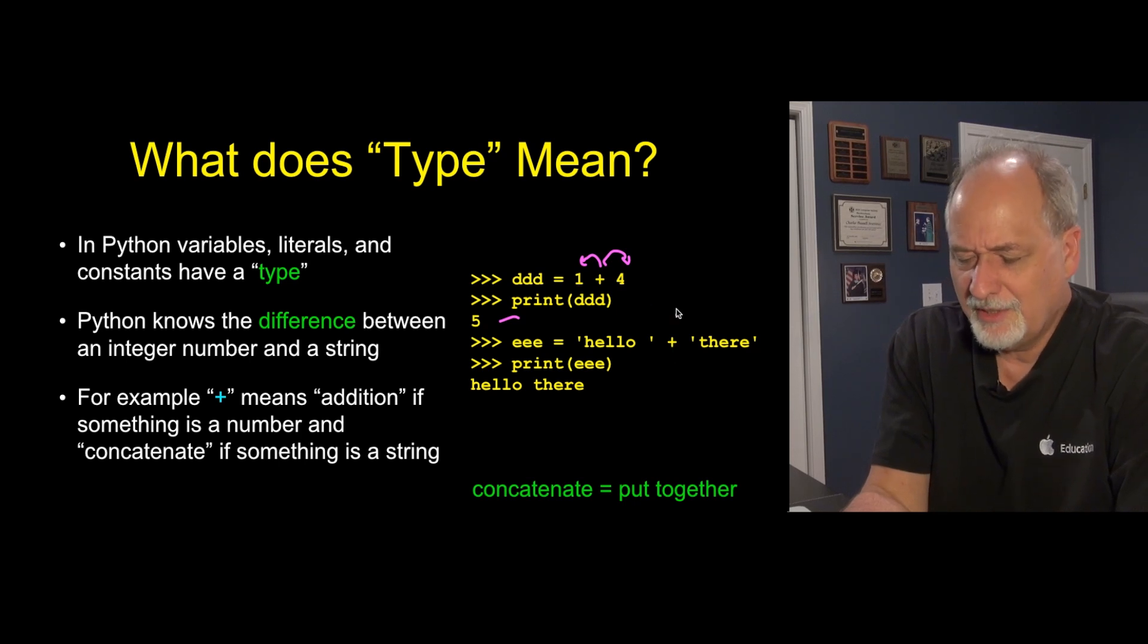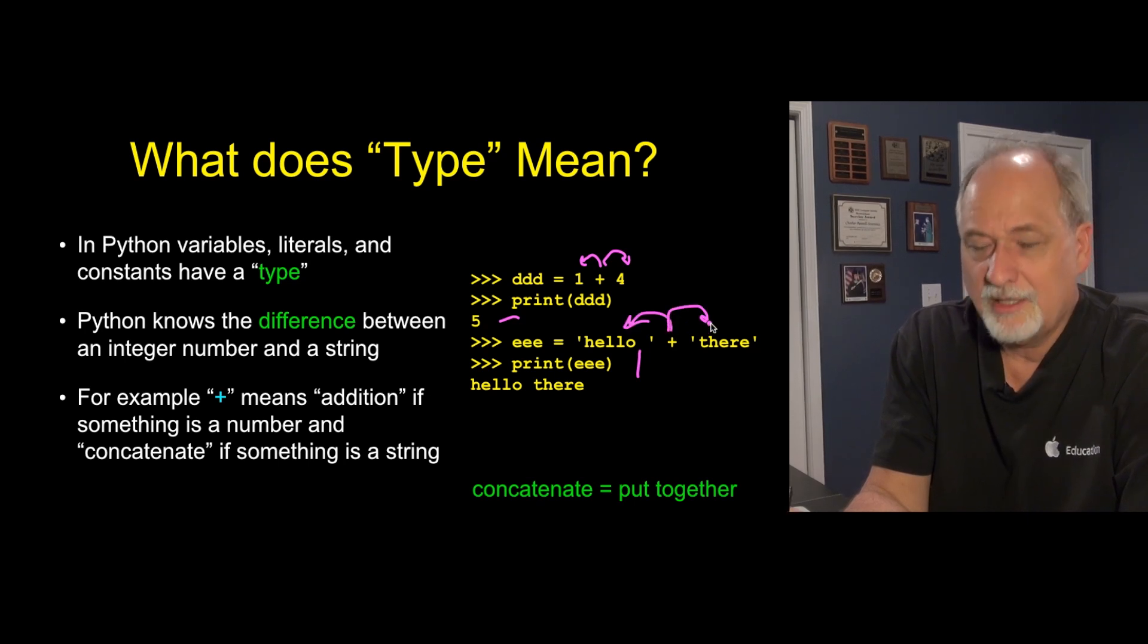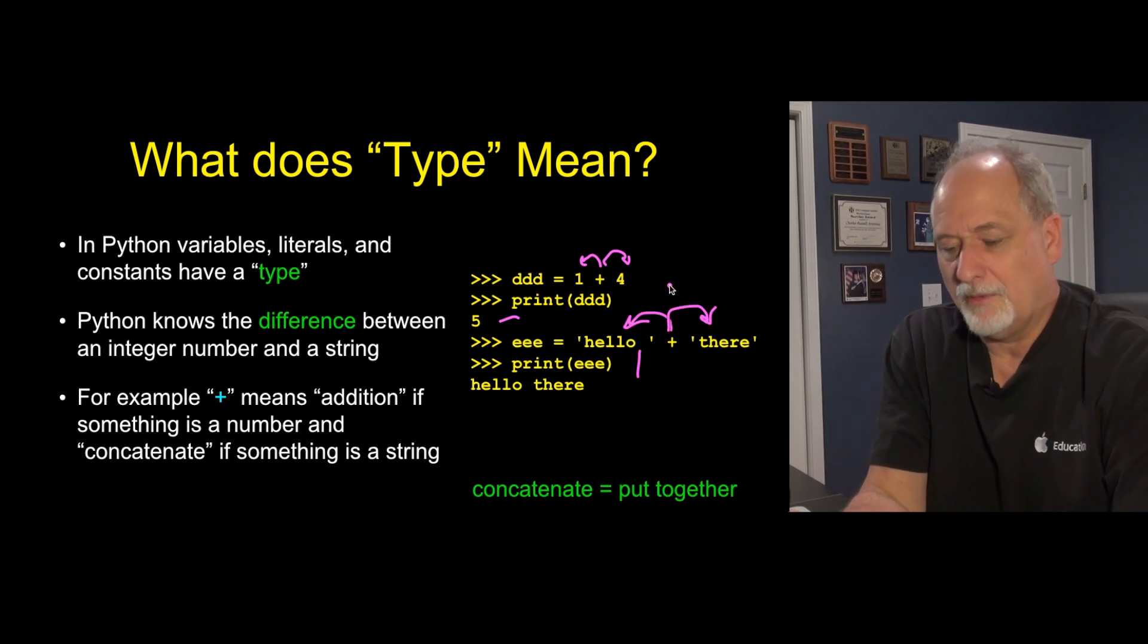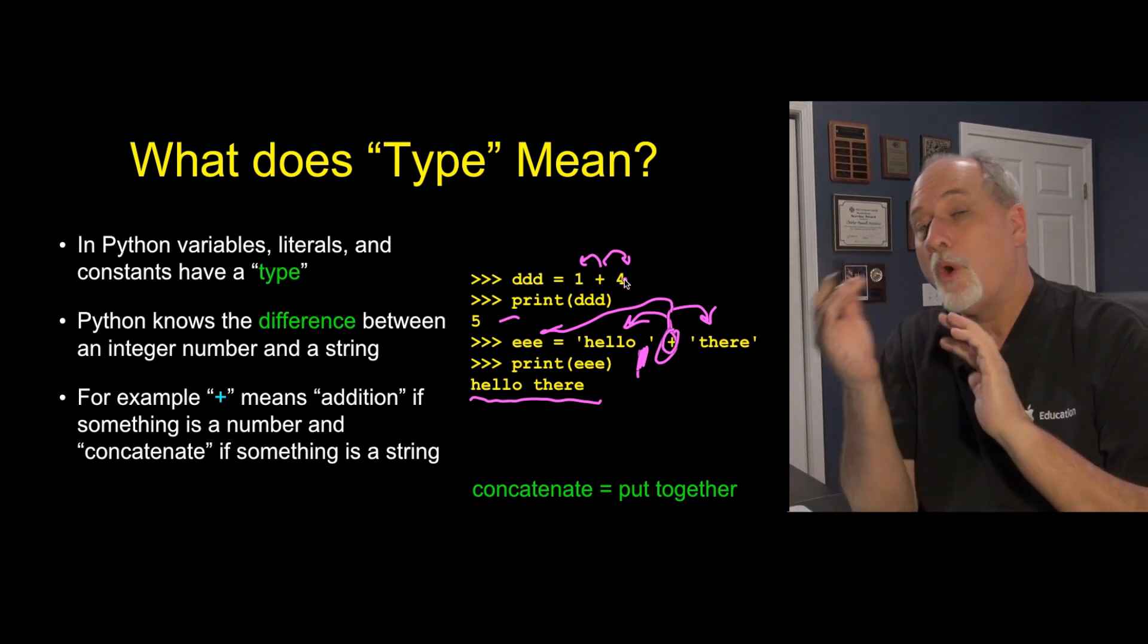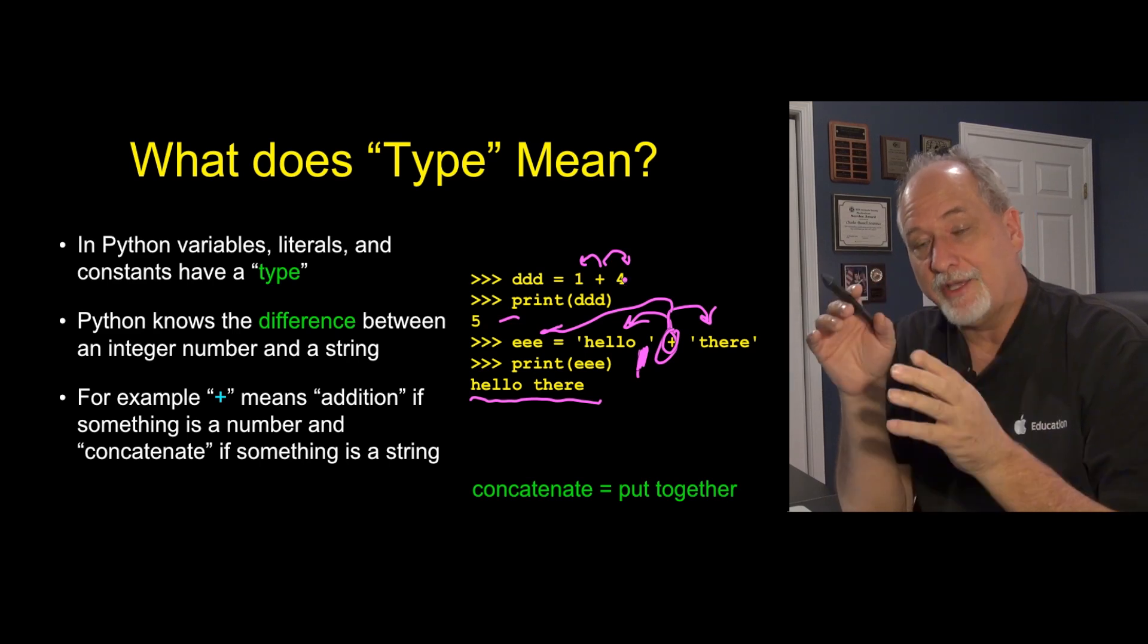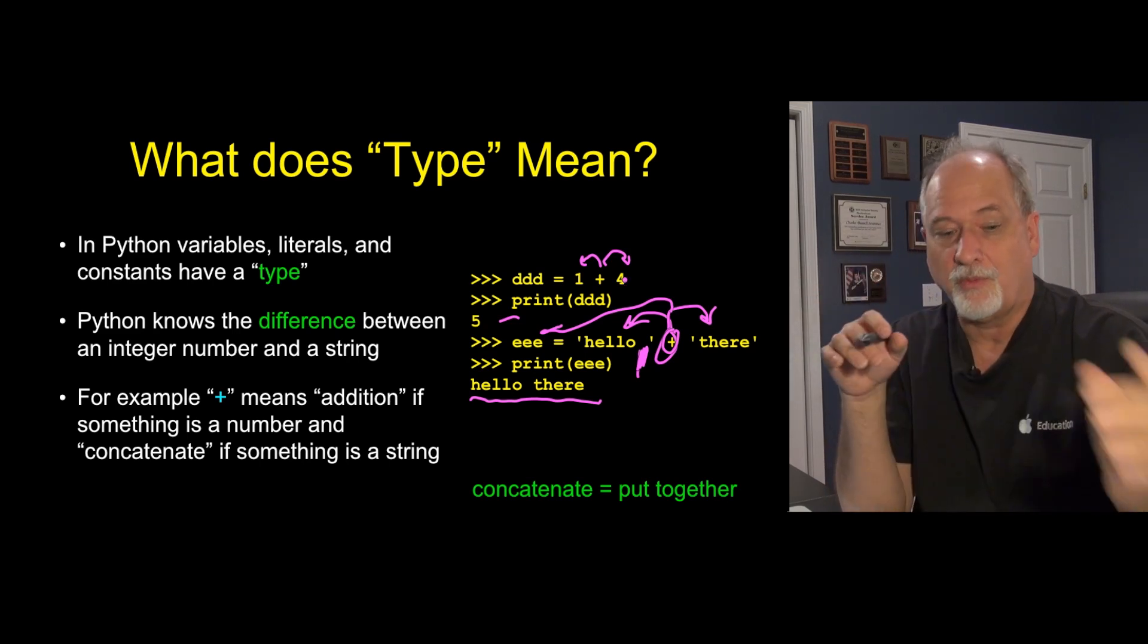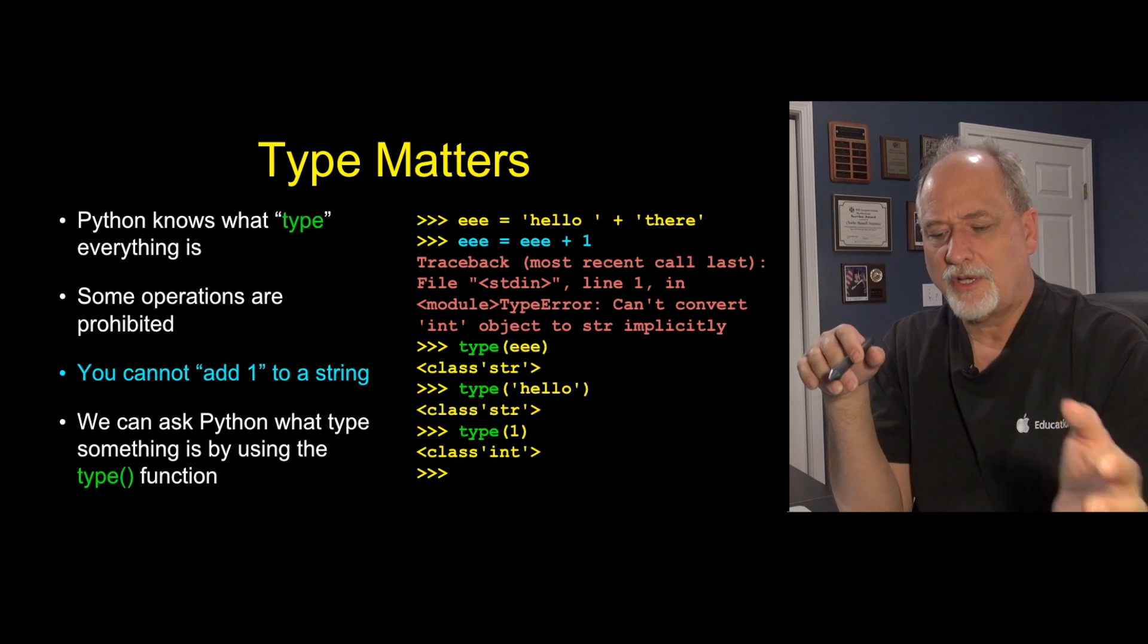We can also use this plus to concatenate two strings. This is hello blank plus there, and plus looks here, says that's a string and that's a string. I know what to do with strings. I will concatenate those two things together, so it becomes another string that gets assigned into EEE, and it's hello space there. The plus doesn't add the space. I added the space by putting it right there. These operators are kind of smart in that they kind of know what they're dealing with.